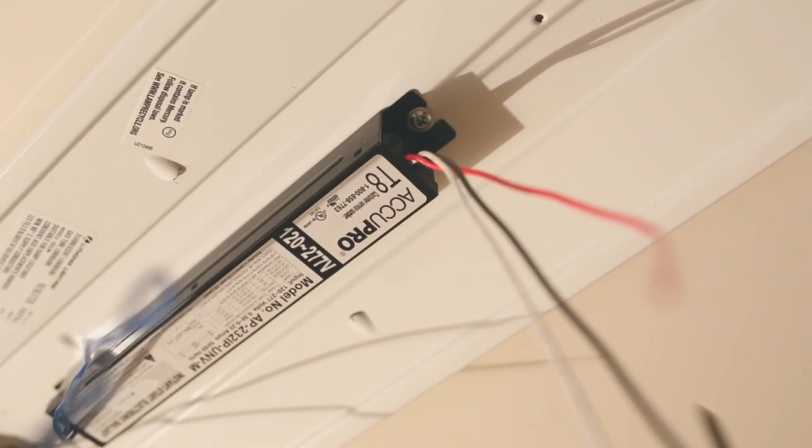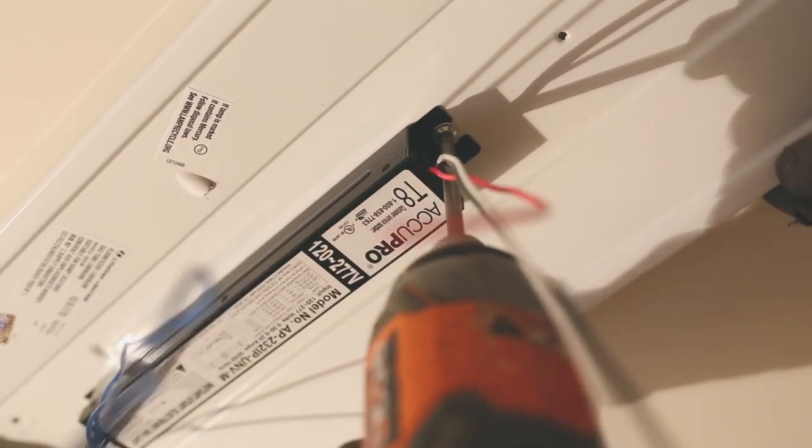And then there's one Phillips head screw that's inside the light that you're going to remove and then the ballast will just come out of the tabs on the other side.